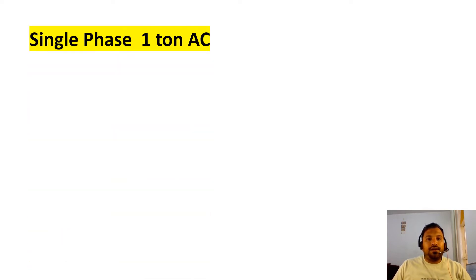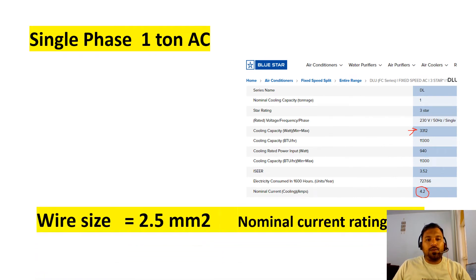Now let us see single phase 1 ton AC rated wire sizes. Single phase 1 ton AC requires 2.5 mm square wire. Basically in this video I consider all are three star rated.